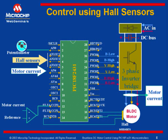Also, motor current can be compared with a fixed reference here using an op-amp comparator, and a fault condition can be generated if the motor current exceeds this reference. This fault can be monitored using the fault pin, connected here as the fault A pin, which will shut down the PWM in the event of an overcurrent condition.